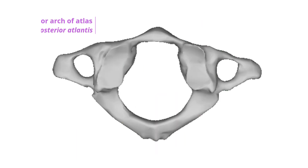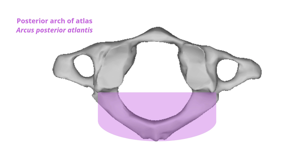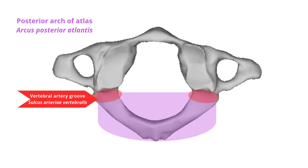Posterior arch of atlas. The posterior arch of the atlas is homologous to the pedicles and laminae of typical vertebrae and forms the posterior three-fifths of the circumference of the atlantoaxial ring. The upper surface of the posterior arch bears a groove called the vertebral artery groove. This groove carries the vertebral artery, the vertebral venous plexus, as well as the suboccipital first spinal nerve. Variably, this groove may be advanced and transformed into a channel, thus forming the channel for the vertebral artery.